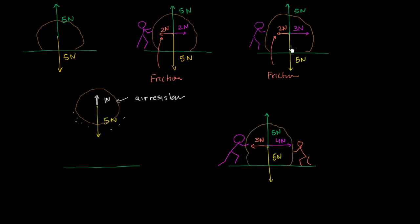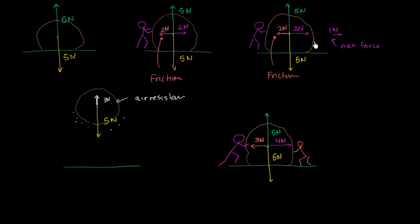In the third scenario, in the vertical direction the normal force balances the force of gravity, keeping the rock from accelerating towards the center of the Earth. But in the horizontal direction, this guy is pushing harder with 3 Newtons while friction is only 2 Newtons to the left. So you do have a net force of 1 Newton to the right. This is a scenario where you have unbalanced forces, in particular in the left-right direction.